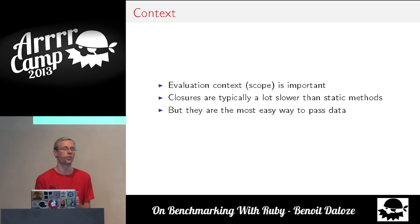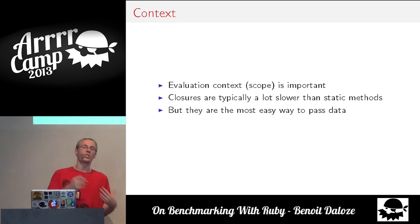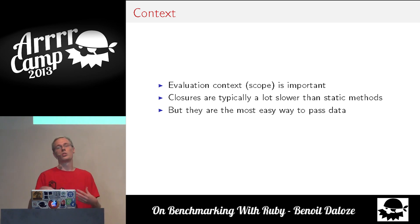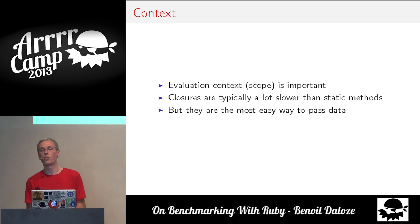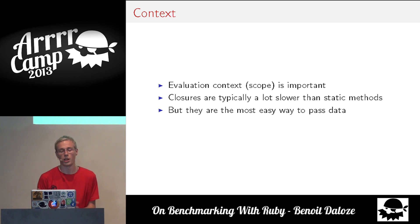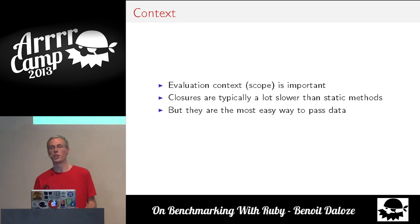The last factor is context. The scope matters — a static method versus a dynamic method is very different. A static method will always be faster because you don't use all the context of other variables, but it's less powerful. Blocks are closures, and if you didn't have blocks in Ruby, it wouldn't be Ruby — so it's always a trade-off. The other factor is the outer context: if you have Firefox running while you do a benchmark, it's probably wrong to benchmark at that time, but you have to measure against that.